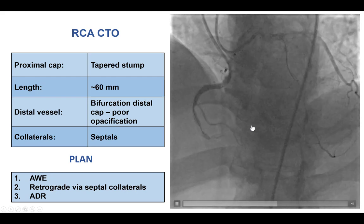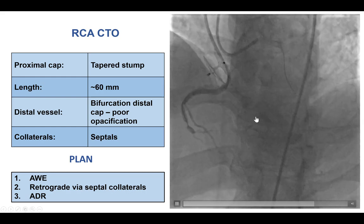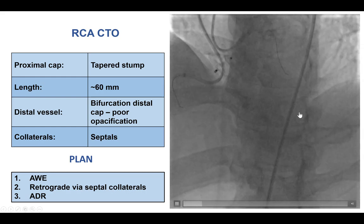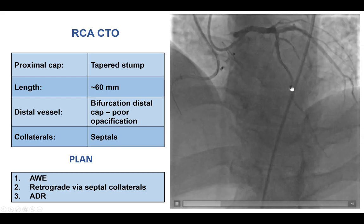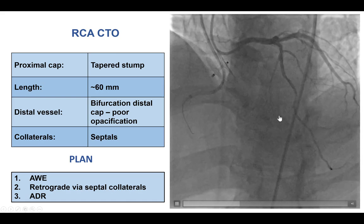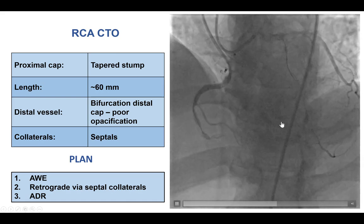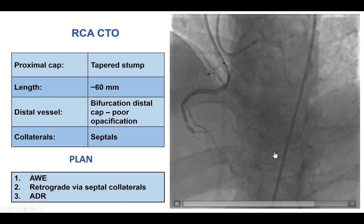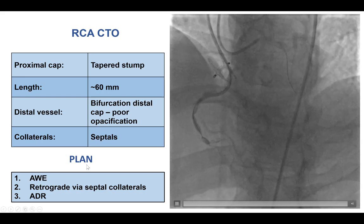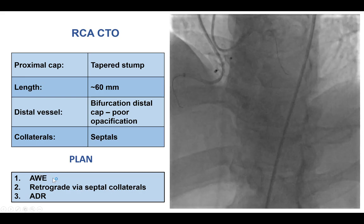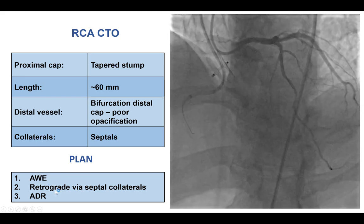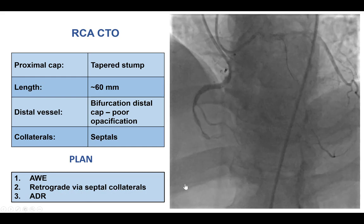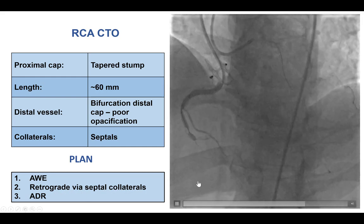The length was hard to determine due to poor filling of the PDA and the distal right coronary artery from the left. However, there appeared to be some septal collaterals. Given the challenges with distal visualization, the plan was to first try antegrade wire escalation followed by retrograde via septals and then antegrade dissection reentry.